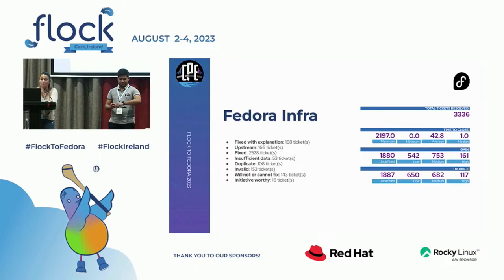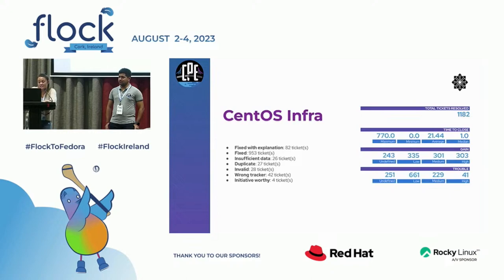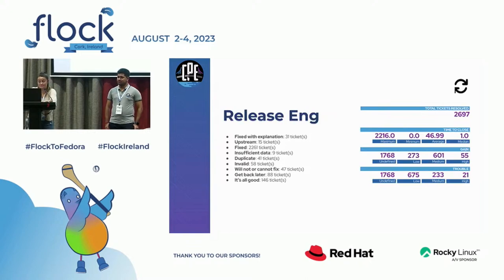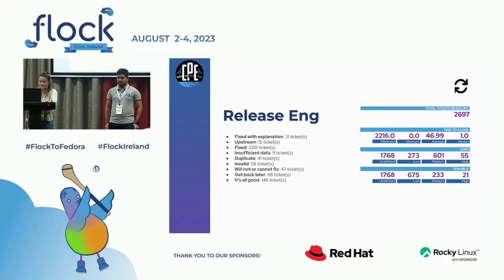Out of those, 16 tickets turned into initiatives because they were much bigger than a one or two-person week of work. For CentOS infra — a one-man band — Fabian is getting through over a thousand tickets in a year, with four of those becoming initiatives. Release engineering teams are single digits in headcount, yet they're also closing tickets in the thousands, which is pretty impressive.